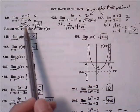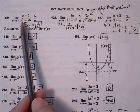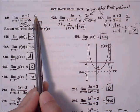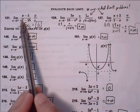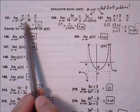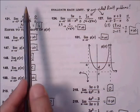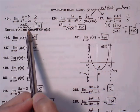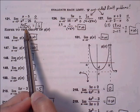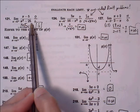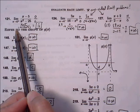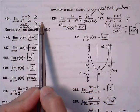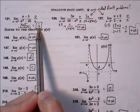Limit as x approaches 5 from the right side of 5. First thing we do is plug in 5 into the expression — we get 0 over 0. So that tells us to further simplify the expression. In the denominator, we can factor that out to be x plus 5 times x minus 5. The x minus 5 cancels out, and we're left with 1 over x plus 5. Plugging 5 in: 1 over 5 plus 5 is 1 tenth.